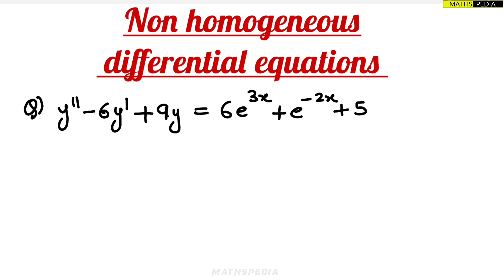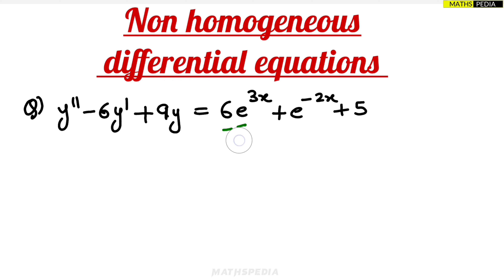In this video we are going to discuss the non-homogeneous differential equation, specifically Type 1, where the function on the RHS is given as k·e^(ax) — k being a constant. For example, in 6·e^(3x), we have k = 6 and a = 3. That is the form we will be dealing with in this question.